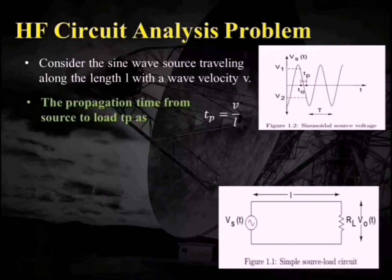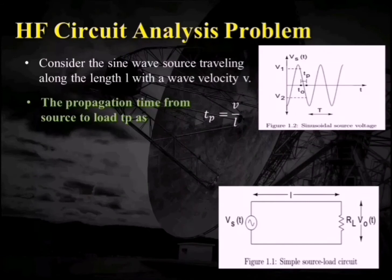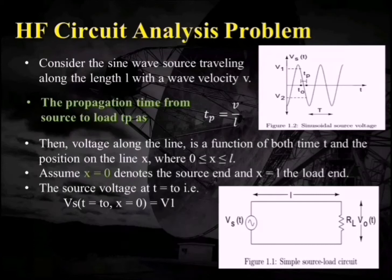In figure 1.1, where the transmission length is L or the distance between the source and the load is L, the propagation time period will be equal to V divided by L. V is the velocity of the electromagnetic wave, that is 3 × 10⁸ meters per second, and L is the distance between the source and the load. Along the length, this voltage will be a function of both time T and position.